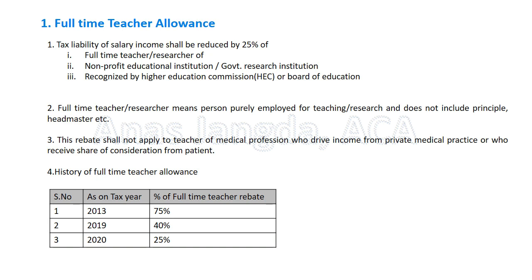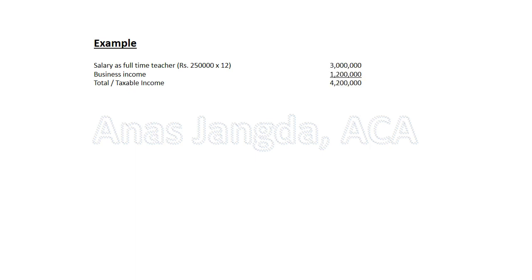An important concept in the first line: 'tax liability of salary income.' If a person is a full-time teacher but also has other source income — such as income from business — the 25% reduction (tax rebate) will only apply to the salary-related tax liability. For other income, there will be no reduction. Let us discuss this with an example. The data shows: salary as full-time teacher is 2.5 lakh per month, multiplied by 12. So salary is 30 lakh rupees, business income is 12 lakh rupees, and total and taxable income is 42 lakh rupees.